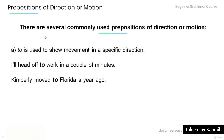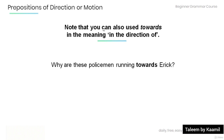There are several commonly used prepositions of direction or motion. The first is 'to.' 'To' is used to show movement in a specific direction. For example: 'I'll head off to work in a couple of minutes.' The preposition 'to' tells us exactly where I'm headed. In another example, 'Kimberly moved to Florida a year ago,' the preposition 'to' shows Kimberly's movement to Florida, a specific direction. Note that you can also use 'towards,' meaning 'in the direction of.'